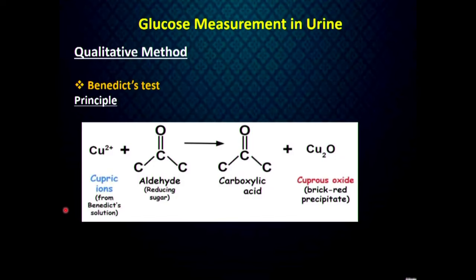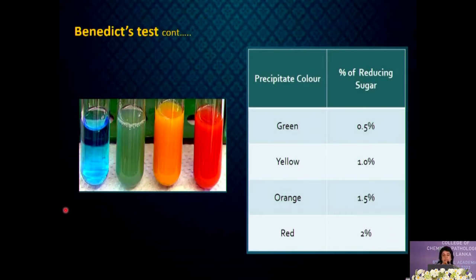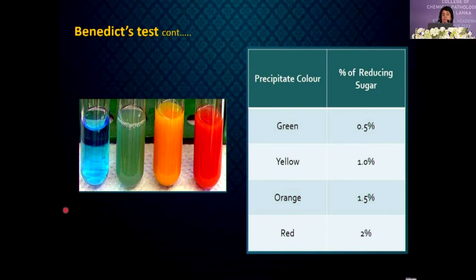For glucose measurement in urine, the qualitative method is the Benedict test. Benedict solution contains cupric ions in an alkaline medium. These cupric ions are converted to cuprous ions by reducing substances. If there is no colour change and the solution remains blue, it indicates no reducing substance. Green indicates a trace amount, while orange and brick red indicate moderate and large amounts of reducing substance respectively.